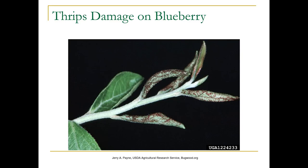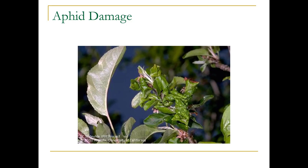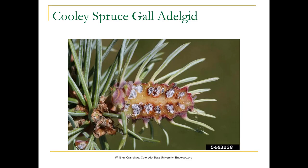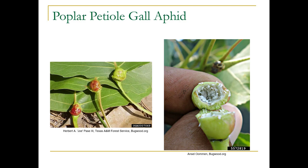Here's the distorted damage on blueberry from thrips. Here's some distorted growth from aphids. Here's what a gall looks like on oaks. Here's a slice of a Cooley spruce gall adelgid — you can actually see the insect in there. What happens is it looks almost like a cone, and as it ages it turns brown. Then there's the poplar petiole gall aphid, which happens a lot on black cottonwood. You'll see this at the base of the petiole, and if you slice it open you're going to see these white fuzzy aphids.